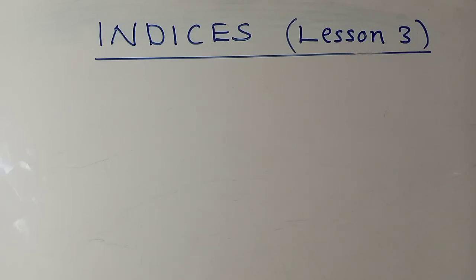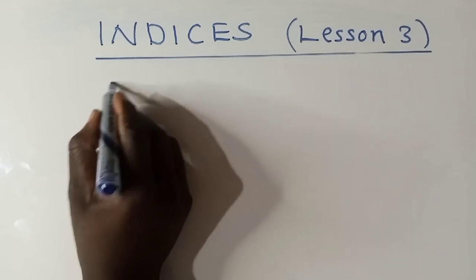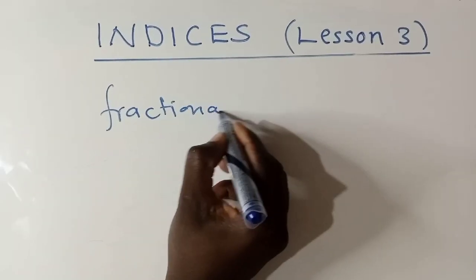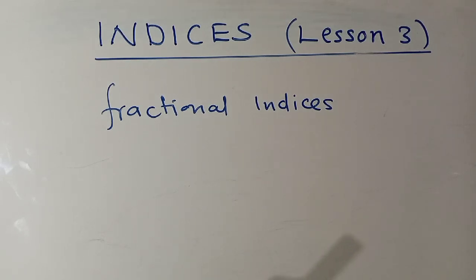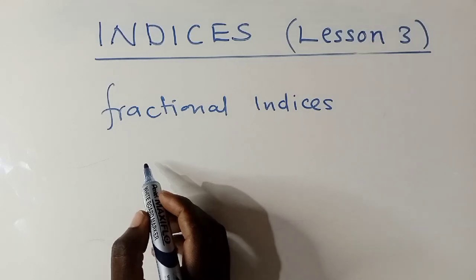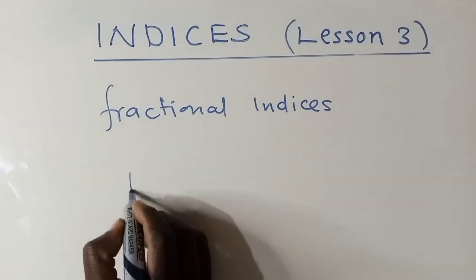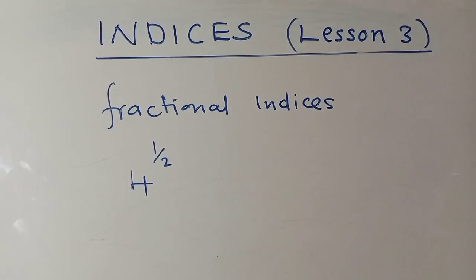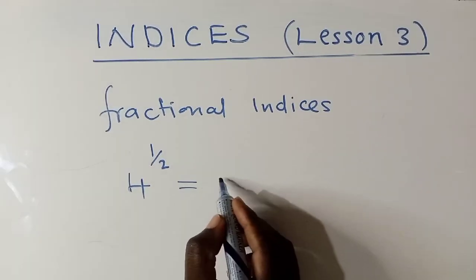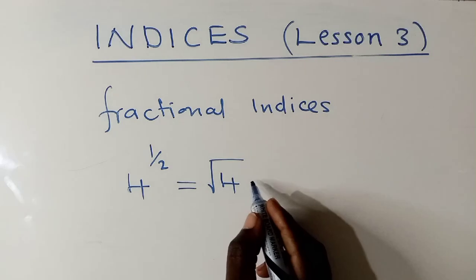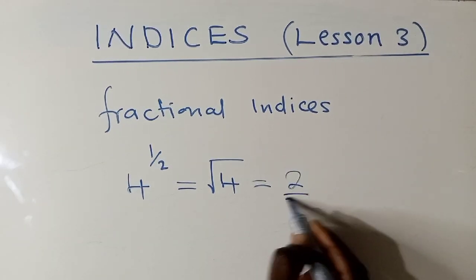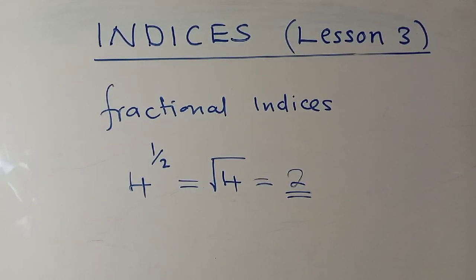Welcome to lesson three. In lesson three we're going to look at fractional indices. How do you deal with fractional indices — these powers in fraction form? Let's say you have something like four to the power one half. How do you simplify this? This would just be the same as a square root. So what is the square root of 4? It's 2. You're done.